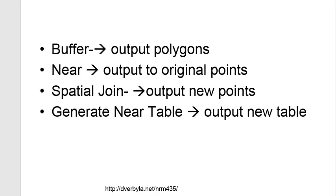In summary, we have four geoprocessing tools for asking questions about distances. The buffer tool is used for fixed-distance questions — for example, show me the area within a mile of towns. Then we have three tools for specific distances: the NEAR tool returns the distance to the closest point, line, or polygon back to the original features; the Spatial Join tool outputs new points and transfers information about the closest feature; and Generate Near Table outputs a new table and can return more than one distance, such as the top three closest distances to nearby polygons.